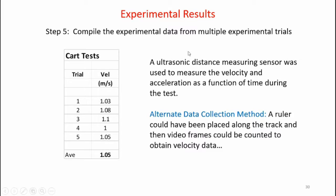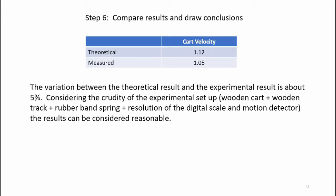Here's the data I collected from the five cart trials. The velocities were measured by the ultrasonic motion detector, and I've calculated an average velocity of 1.05 meters per second. The theoretical was 1.12 meters per second and the measured average was 1.05 meters per second. The variation between the theoretical result and the experimental result is about five percent. Considering the crudity of the experimental setup — the wooden cart, wooden track, rubber band spring, and resolution of the digital scale and motion detector — the results can be considered quite reasonable.